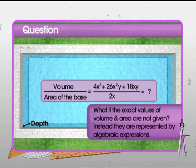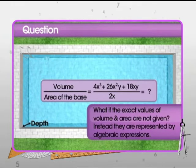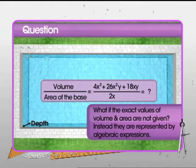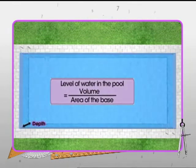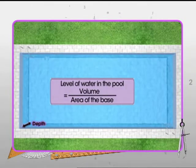Let's consider the pool scenario where we are not given the exact values of volume and area. Instead of a monomial, they are represented by algebraic expressions or polynomials. What will be the level of the water in the pool? Well, the level of the water in the pool can be obtained by dividing the volume by the area of the base.